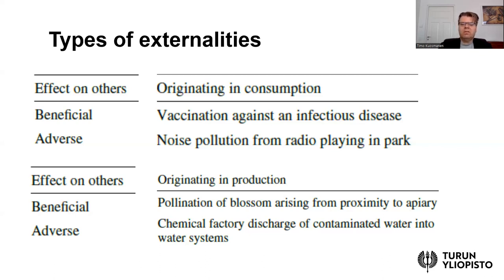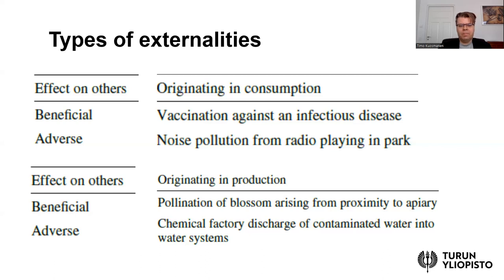The situation we are most concerned with in this course is adverse effects originating in production. One example is a chemical factory discharging contaminated water into a water system. We had a similar example of runoff of nutrients to a river in the previous lesson. Very often when we think about pollution, it is this kind of adverse externality originating in production — the same applies to air pollution or discharge of greenhouse gases to the atmosphere.